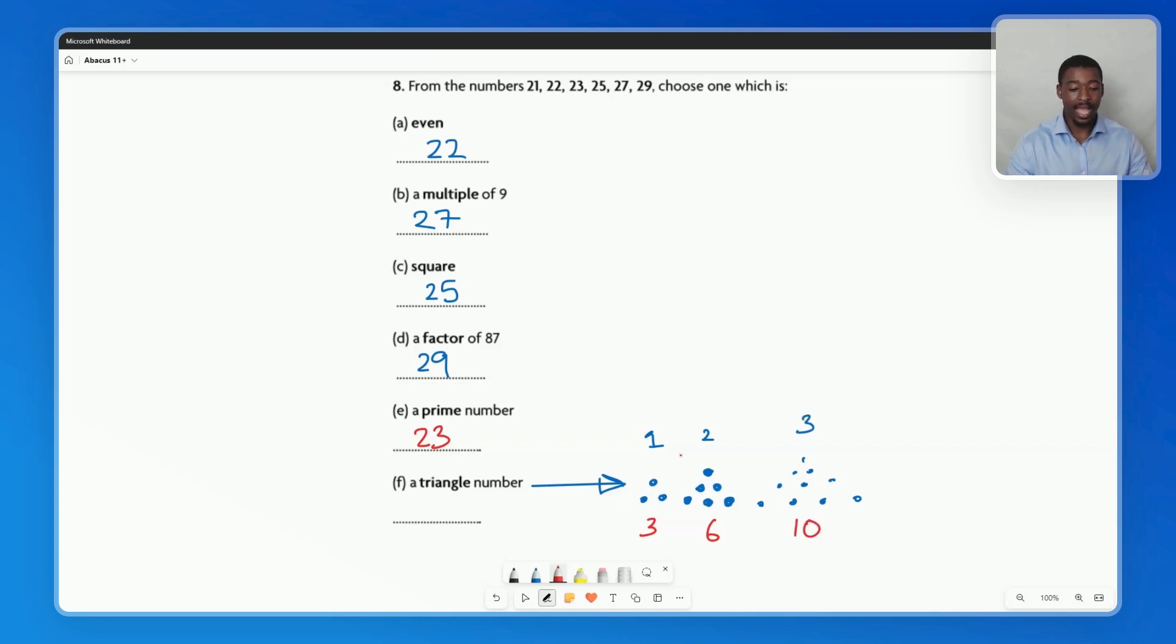So you can see that as we get bigger and bigger, we need more dots to make that equilateral triangle. And the number of dots represents our triangle numbers. But you can also see how they're going up in a consistent pattern. 3 to 6 is plus 3, 6 to 10 is plus 4, then it's plus 5, so on and so forth.